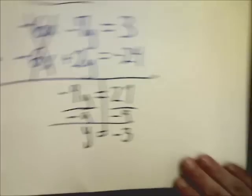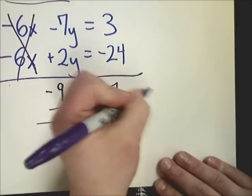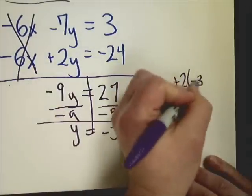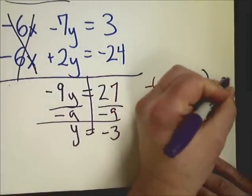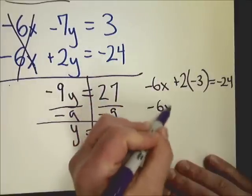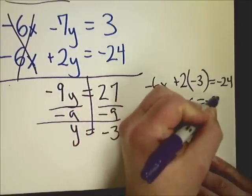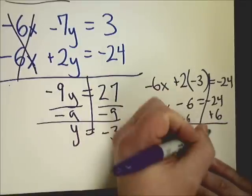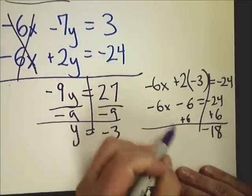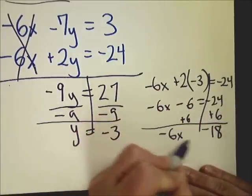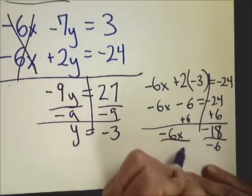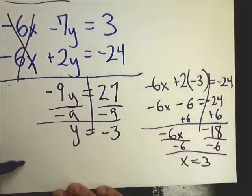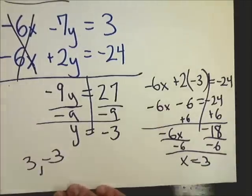To find out what the x value is, of course, you just plug it back in. I'm going to plug it back into the second one. Make sure you plug it in for the right variable. So negative 6x minus 6 equals negative 24. To get rid of minus 6, I need to add 6, which gives negative 18. Negative 6x divided by negative 6, and you get x is equal to 3. So your final answer is 3 and negative 3.